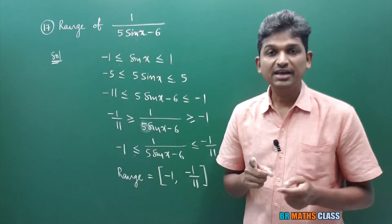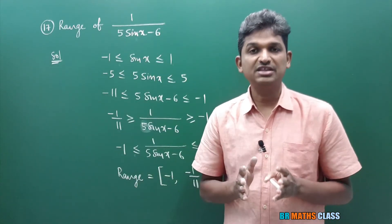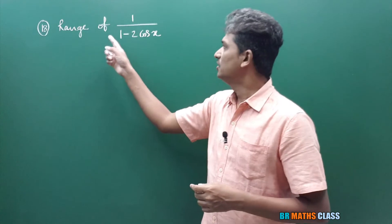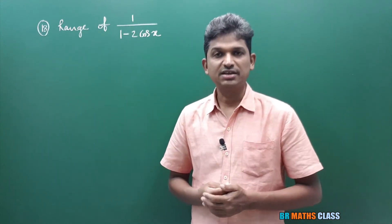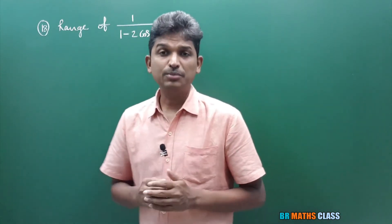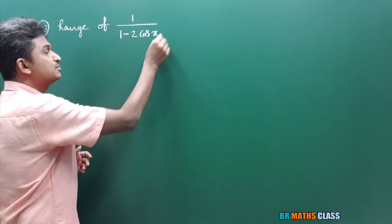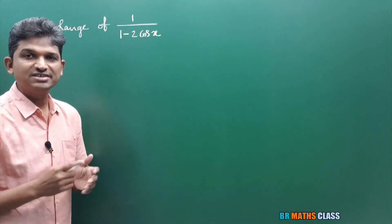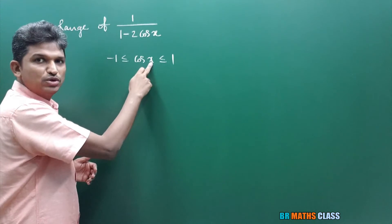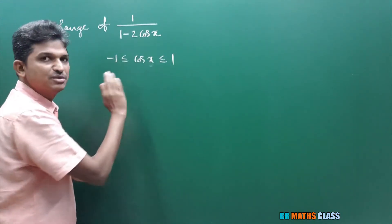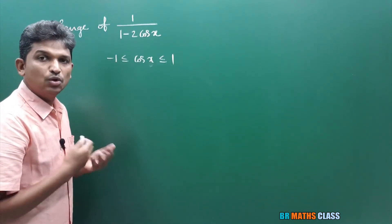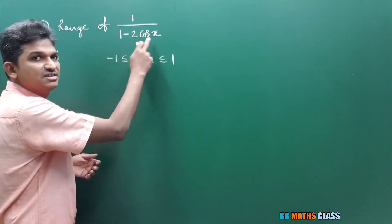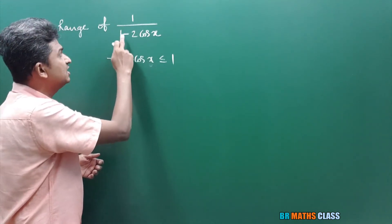I am saying again and again: please try to understand the first three problems, then you will understand exactly what point I want to discuss. You observe question number 18 — we want to find the range of this function. Very interesting problem. Normal procedure: first I will find which interval this expression lies in. Here cosx is present; the range of cosx is the closed interval [minus 1, 1]. The expression is 1 minus 2cosx.